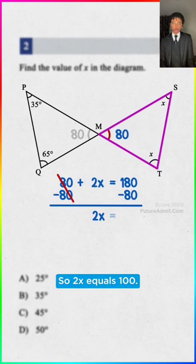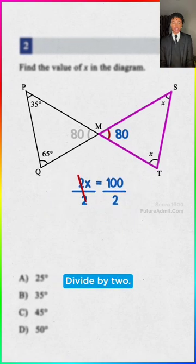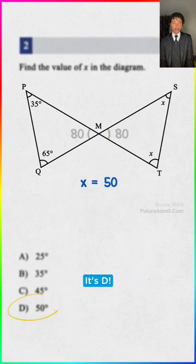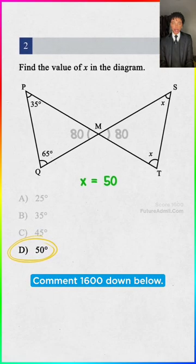Subtract the 80, so 2x equals 100, divide by 2, and there it is! x equals 50! It's D! Want more SAT hacks? Comment 1600 down below.